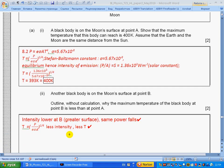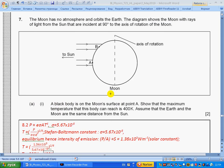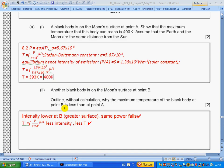Part ii: Another black body is on the moon surface at point B. Outline without calculation why the maximum temperature of the black body at B is less than that at A. If we look, the same amount of energy falls, but here falls on smaller surface, here on bigger surface. On bigger surface means that area is greater, so temperature will be less.